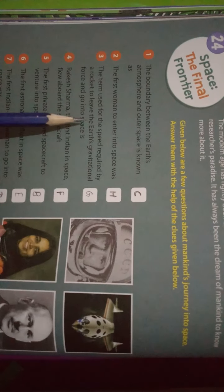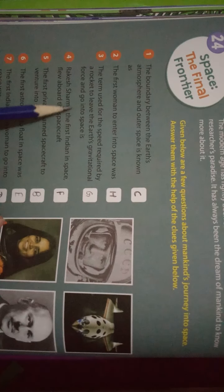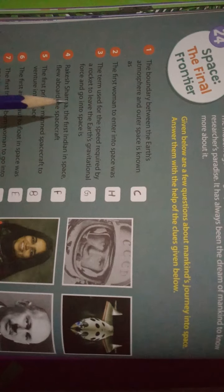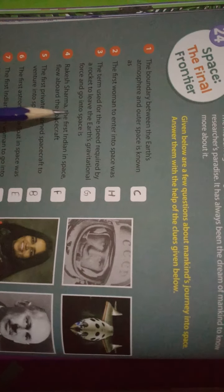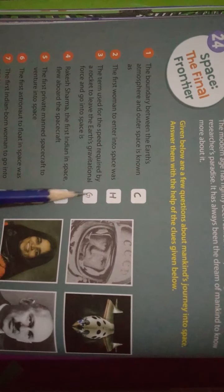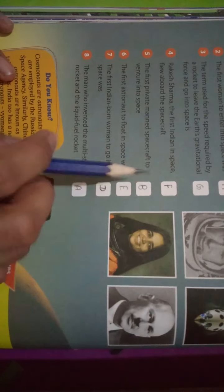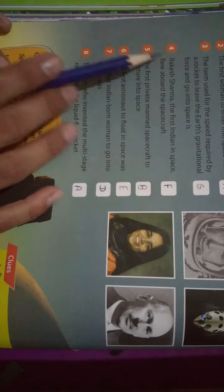The term used for the speed required by a rocket to leave Earth's gravitational force and go into space. Which word is used? The answer is G. Look at option G. What is the answer in G? Escape velocity. The answer is option G.